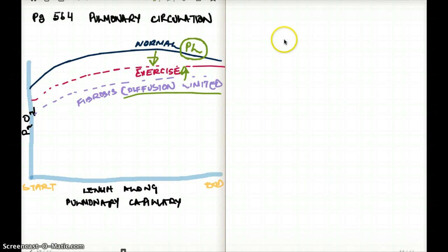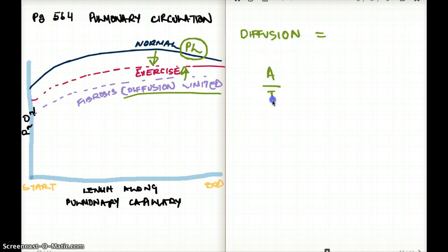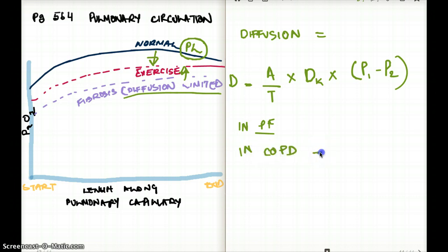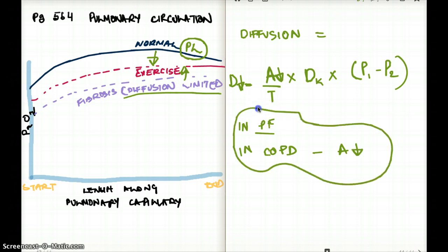Now let's talk about diffusion and perfusion-limited with the help of an equation. Diffusion equals area divided by thickness, times the diffusion constant, times P1 minus P2. In pulmonary fibrosis we see an increase in thickness, so when the denominator increases, diffusion capacity drops. In emphysema or COPD, the area drops, so when area drops, diffusion also drops. So in both pulmonary fibrosis and COPD we see a decrease in diffusion.